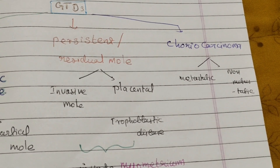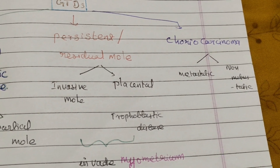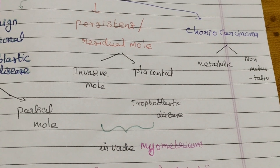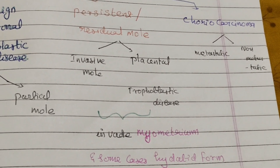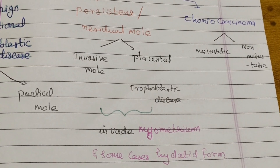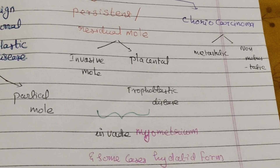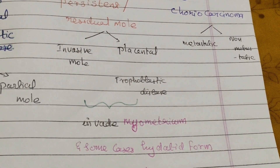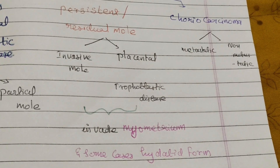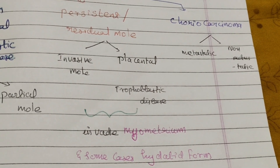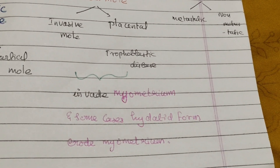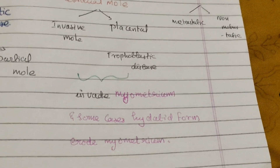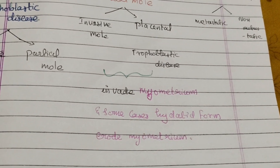The second group is persistent or residual mole, which includes invasive mole and placental trophoblastic disease. The third group is choriocarcinoma, which can be metastatic or non-metastatic. The invasive mole and placental trophoblastic disease both invade the myometrium and erode it, hence the name invasive mole.